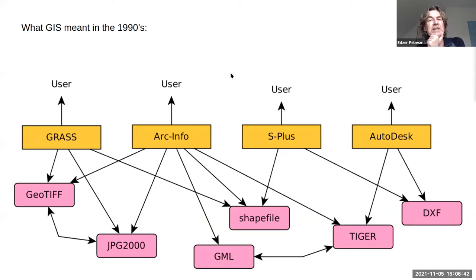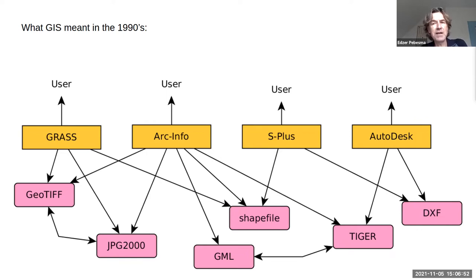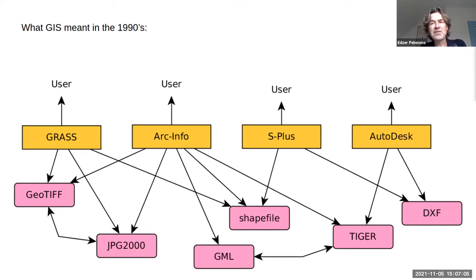What came later was the idea of file formats — that it was very convenient to write spatial data in file formats understood by several software packages, so you could write things and read them in the next environment. There was some exchange happening. This occurred in the 90s, but of course you can see this is a hopeless hodgepodge for an end-to-end problem — every system has to understand all these file formats.